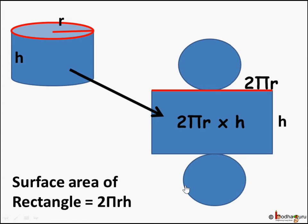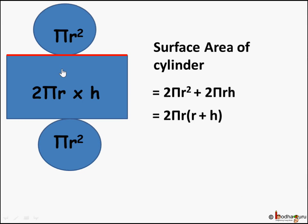Now we know everything. The surface area of the rectangle is 2πRH, and the two circular faces contribute πR² + πR² = 2πR². So the total surface area of the cylinder is 2πR² + 2πRH. Taking 2πR as common, we get 2πR(R + H). Children, always not just remember the formula — think about how we derive it, so that if you forget it in an exam, you know how to find it. So the surface area of a cylinder is 2πR(R + H).